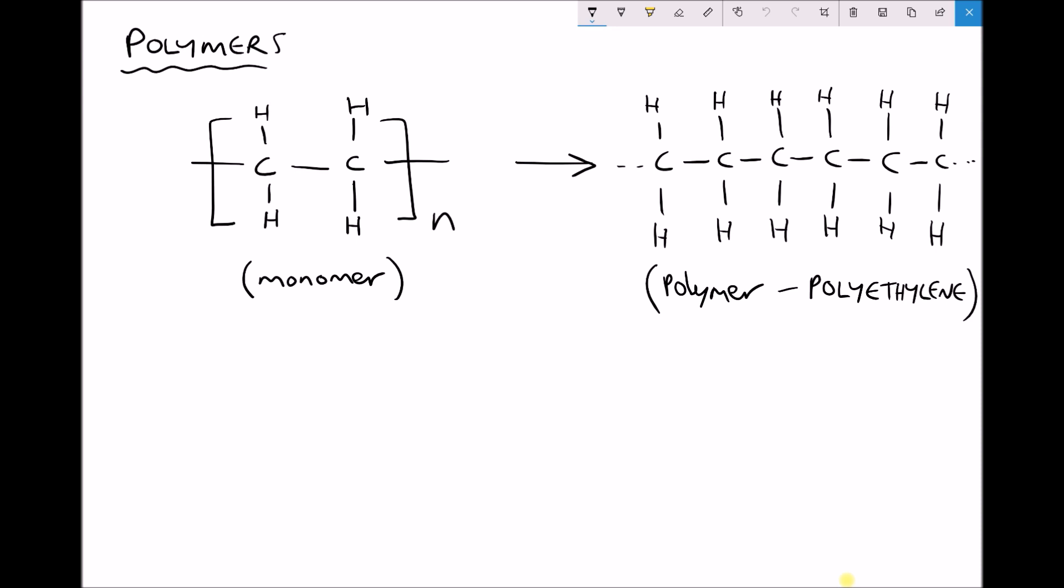On the left hand side of the screen here we have what's called a monomer and mono means one, and a monomer is basically a single repeating unit. So on the left hand side we see the monomer and on the right hand side we see the polymer. Poly means many, so in effect many monomers are joined together to form a polymer.